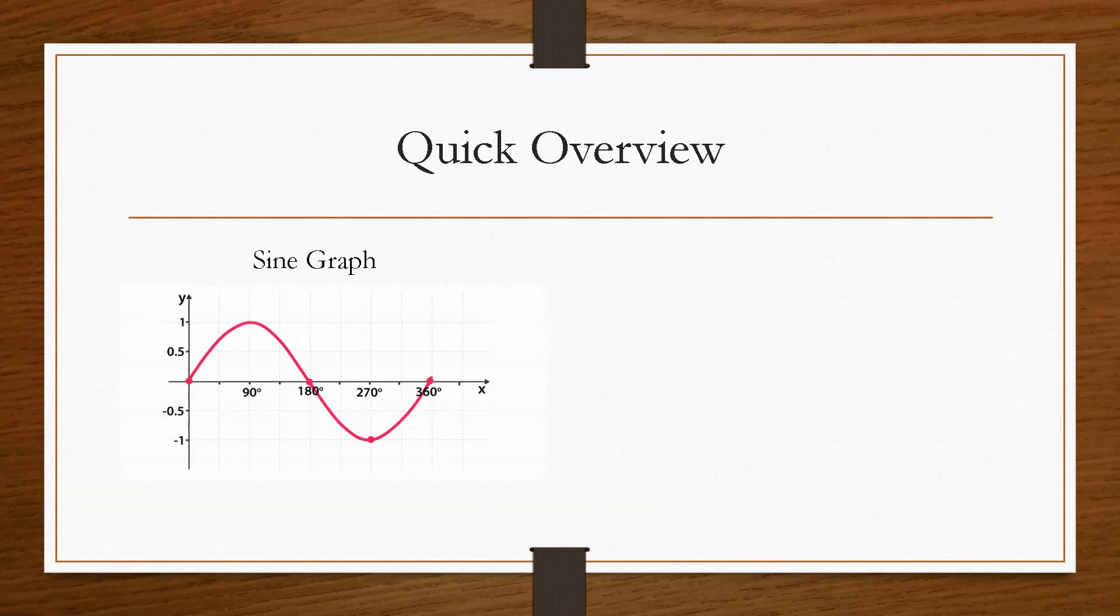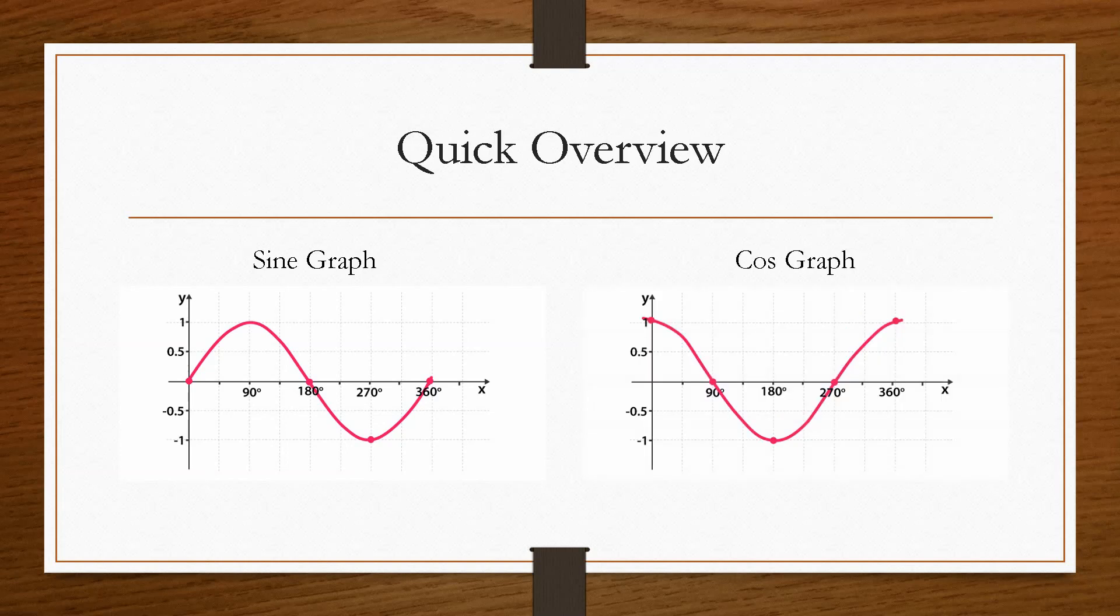So keeping that in mind, just a quick reminder that the sine graph looks like this, and the cos graph looks like this. Sine being the characteristic S shape, and cos being the characteristic V shape. Now sine will start at 0, go up to 1, cut at 180 degrees on the x-axis, down to minus 1, and then back to 360. Cos starts at 1, will cut at 90 degrees, turn at 180, cut at 270, and finishes at 1 again.